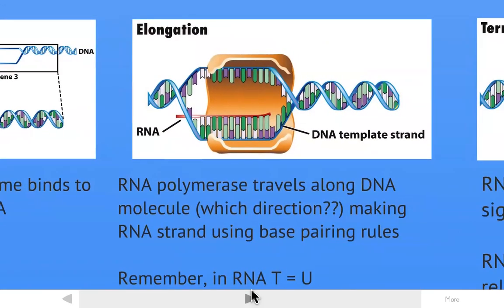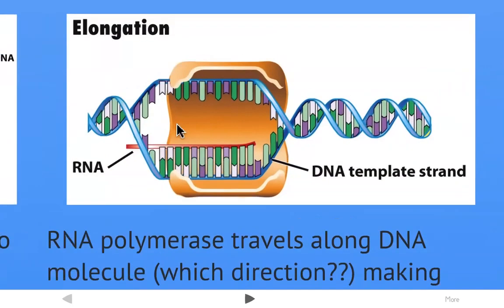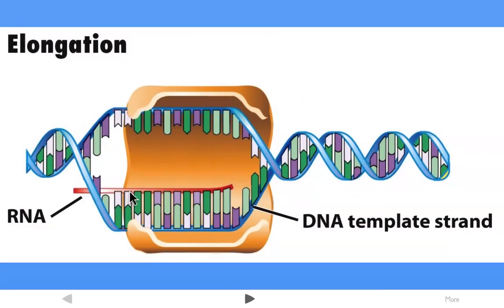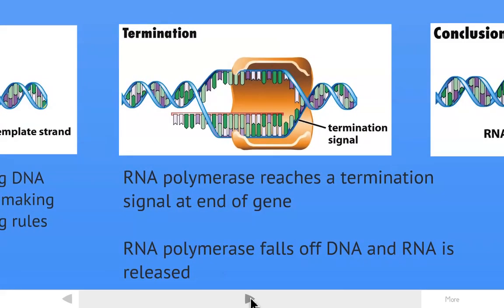Then it moves into the elongation stage when the RNA polymerase travels along the DNA template strand and makes the RNA molecule, adding RNA nucleotides one by one based on the base pairing rules. Remember that since we are making a RNA molecule here, it will be adding U's instead of T's. Always remember to put U's in the RNA molecules.